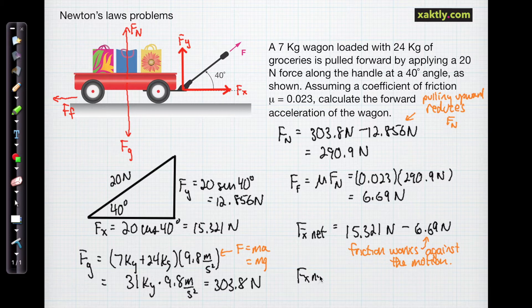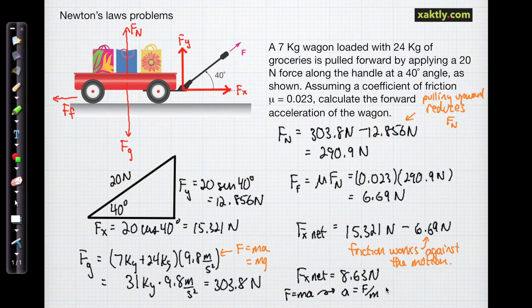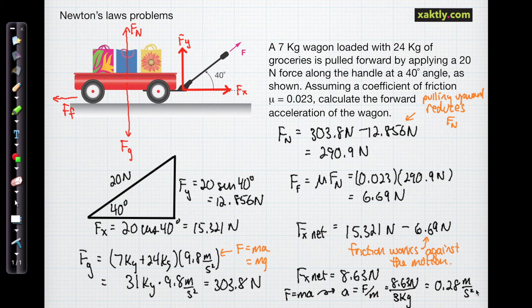The net force in the x direction is going to be a little over 8 newtons because it's diminished a little bit by the force of friction. So finally we can calculate the acceleration. We use Newton's second law, force equals mass times acceleration. So acceleration is force over mass. 8.63 newtons divided by the total mass of the wagon, that should say 31 kilograms in the denominator, so we have an acceleration of 0.28 meters per second squared.